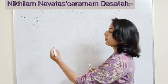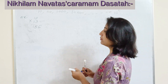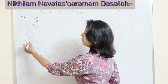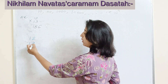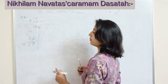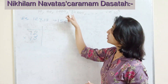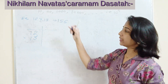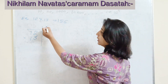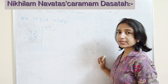Now let's see how the Nikhilam Sutra works to get the direct answer. When we have numbers nearest to the base, we need to find what is missing from the base — which base these numbers are nearest to. Obviously it is nearest to 10, so now we have to subtract 10 from each number.